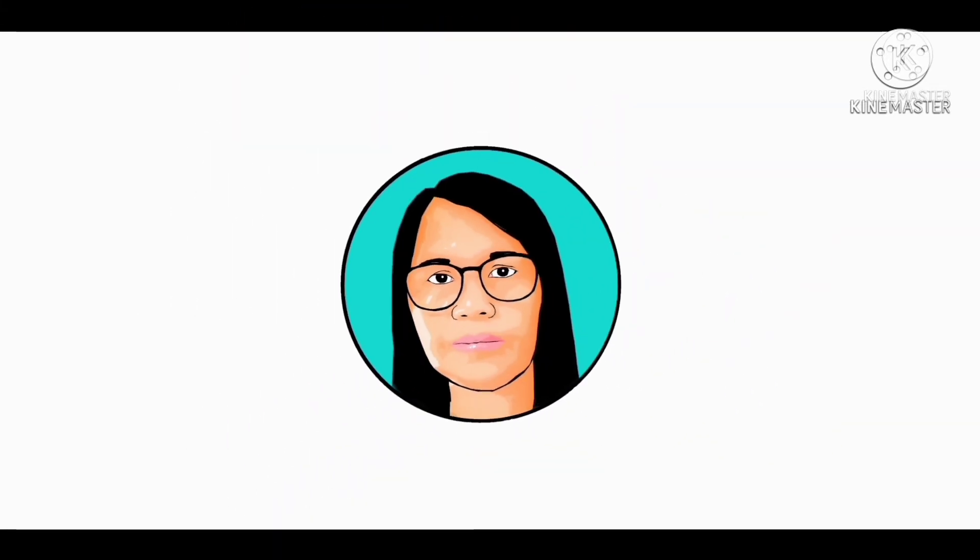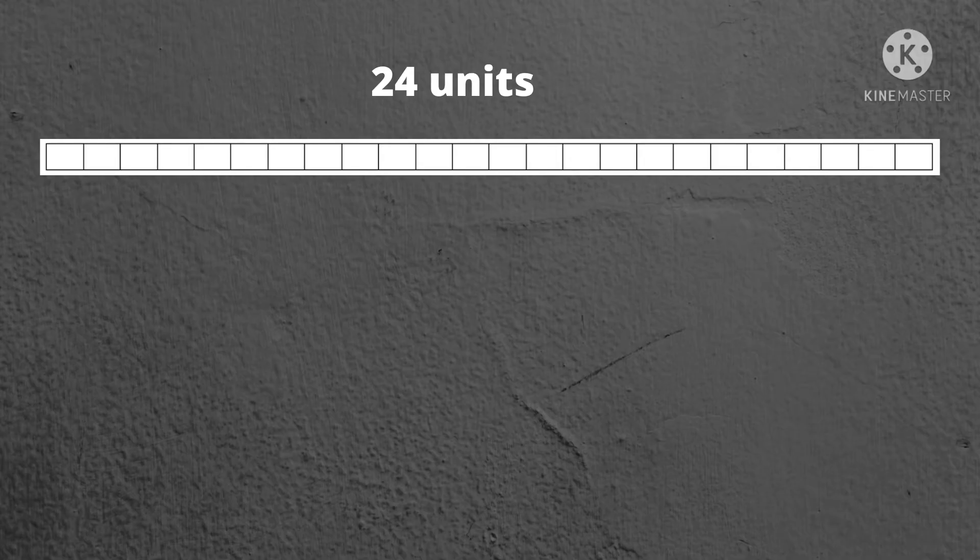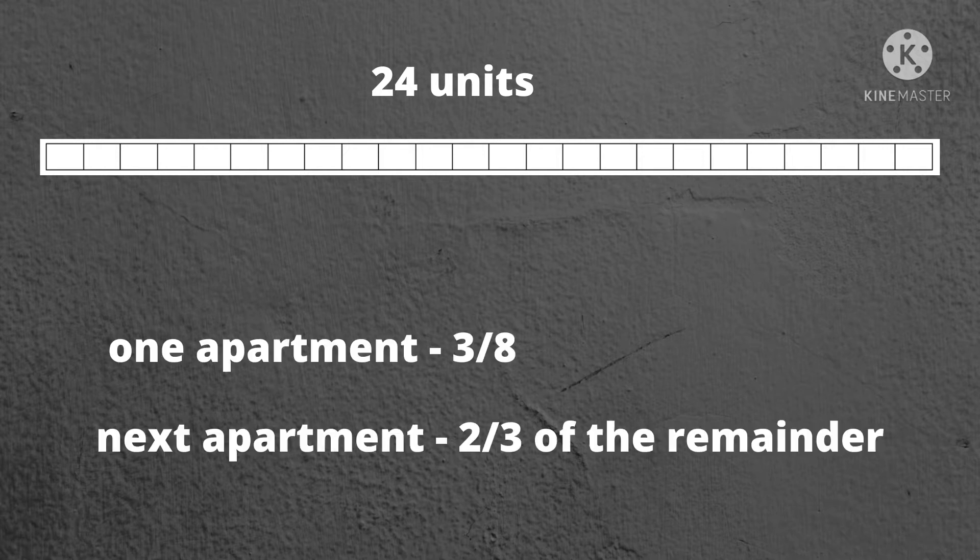Welcome to my channel. We will now start dividing 24 units by 8 because we will identify first the three-eighths of the first apartment. Since 24 units divided by 8 is 3, meaning we have to group the 24 units by 3. Let's now see the process.